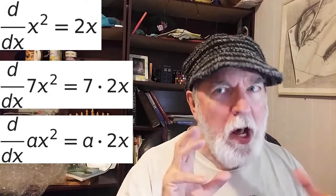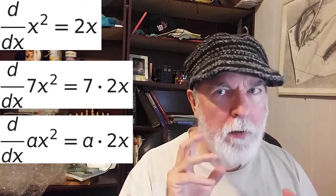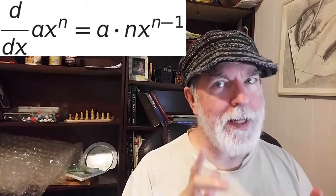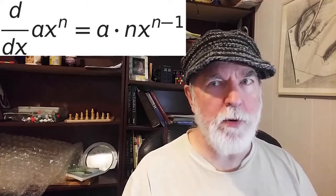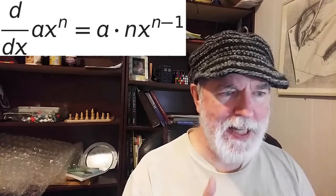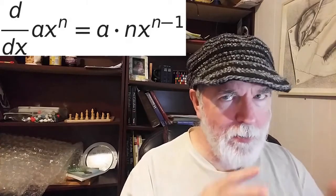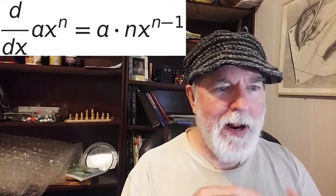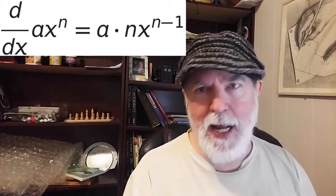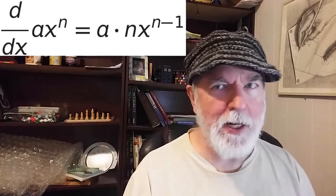So we will modify our power rule to look like this. If our original curve is y equals a times x to the n, then our derived curve, our dy by dx curve, is going to be a times nx to the power of n minus 1.